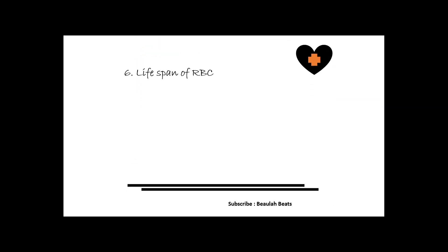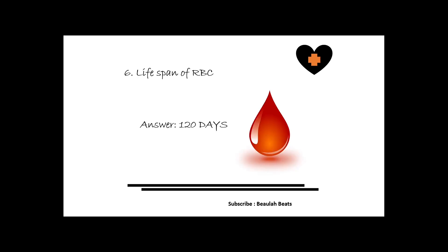The sixth question is: what is the lifespan of RBCs? RBCs are also called erythrocytes. Every second, two to three million RBCs are produced in the bone marrow and released into circulation. The answer is 120 days — the lifespan of RBCs is 120 days.